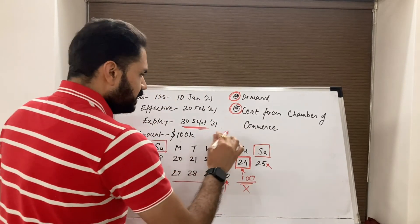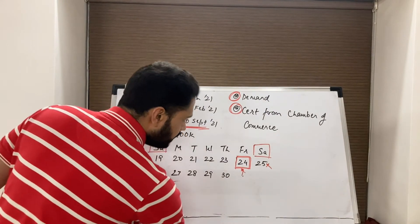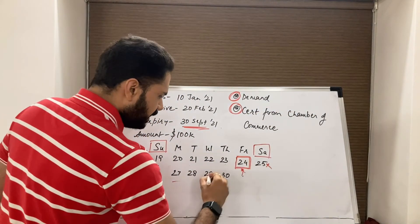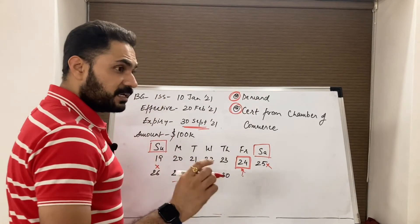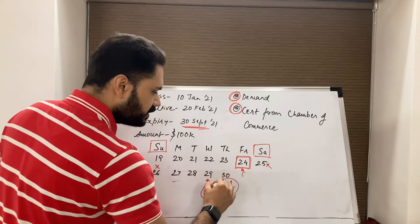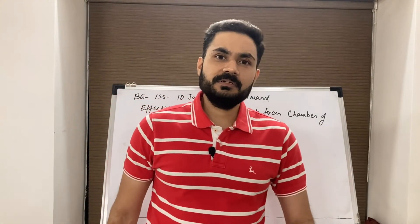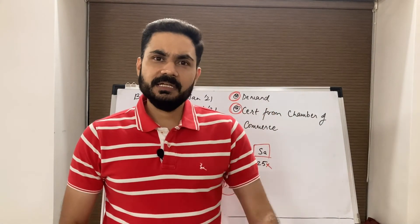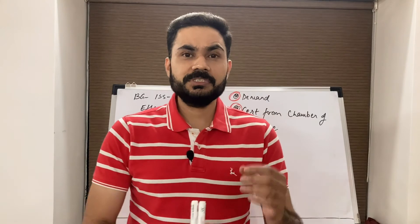For example, if the beneficiary presented the certificate on one date and then presented the demand on the 29th and confirmed the presentation is now complete, day one will be 30th September. The guarantor then takes five business days and informs the beneficiary whether the demand is complying or not. If the demand is complying, payment will be made immediately.